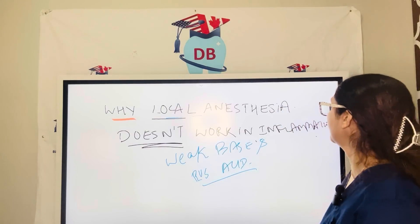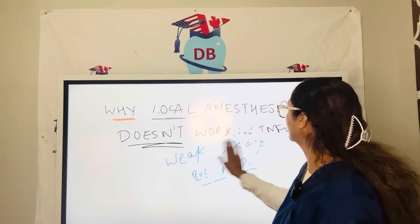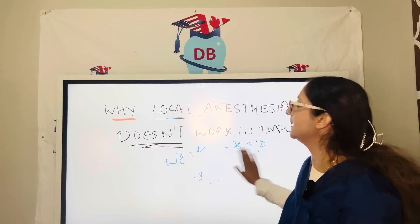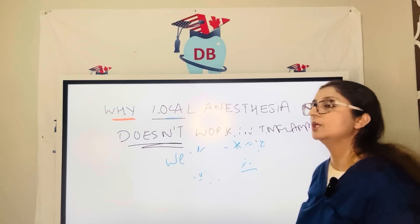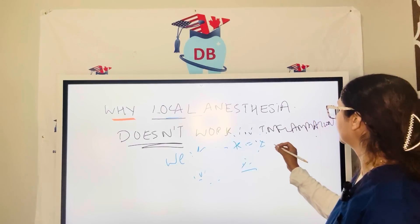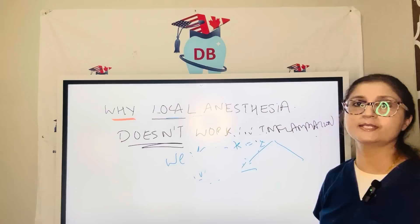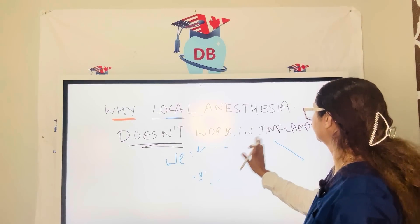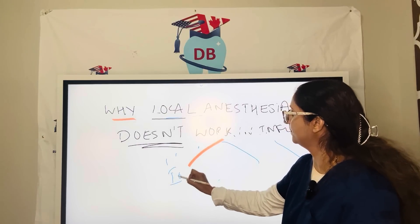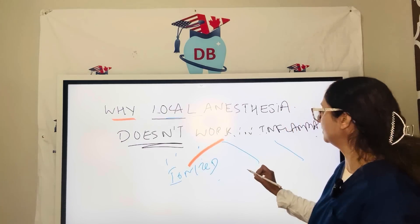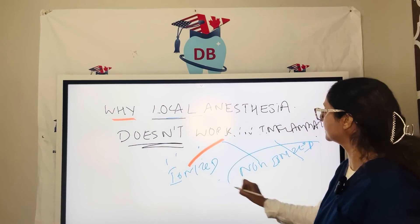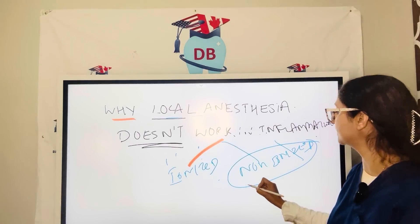Let us try to understand why local anesthesia does not work in an acidic condition. In acidic conditions, the local anesthetic persists as the ionized form. There are two forms in which local anesthesia is going to exist: the ionized form and the non-ionized form.